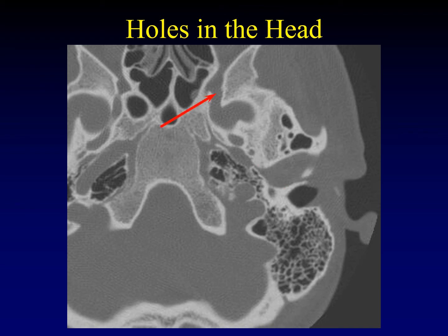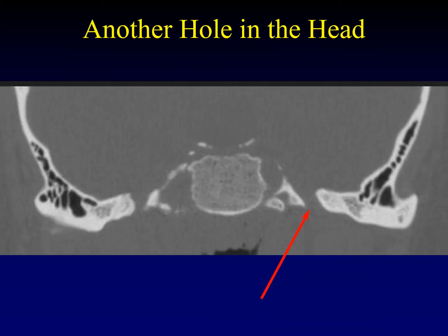Moving forward, this is foramen rotundum seen along its length — it doesn't look very round because you're not seeing it in cross-section. Further forward is the inferior orbital fissure. All of these foramina are of course visible in the coronal plane as well. Foramen ovale in the coronal plane has a 45-degree slope out laterally as it descends through the skull base — a really important landmark for perineural spread.